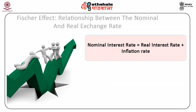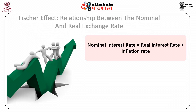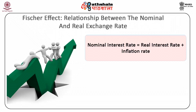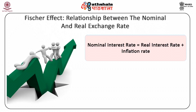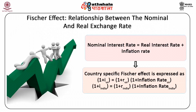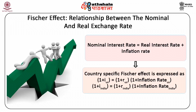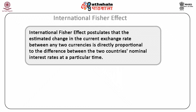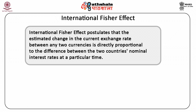When nominal interest rate is 12% and expected inflation rate is 8%, the real interest rate is 4%. If the expected inflation rate increases to 13%, then the real interest rate is minus 1%. Country-specific Fisher Effect is expressed as: 1 plus I_US equals 1 plus R_US multiplied by 1 plus inflation rate of US; and 1 plus I_India equals 1 plus R_India multiplied by 1 plus inflation rate of India. International Fisher Effect postulates that the estimated change in the current exchange rate between any two currencies is directly proportional to the difference between the two countries' nominal interest rates at a particular time.